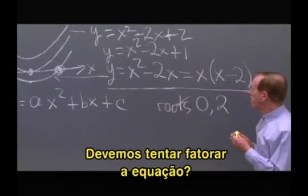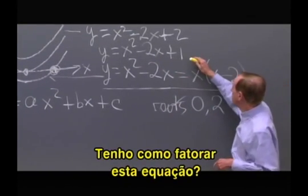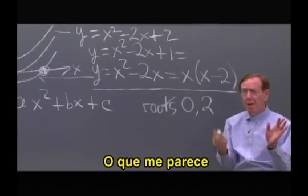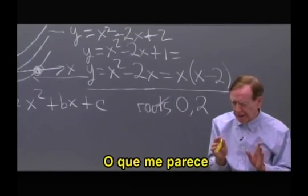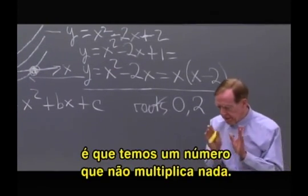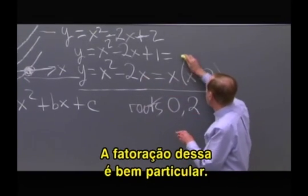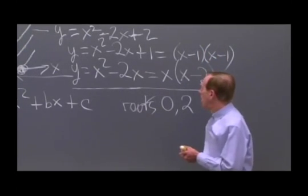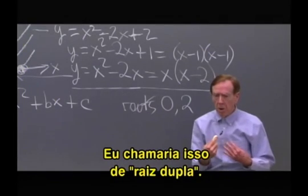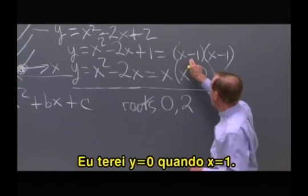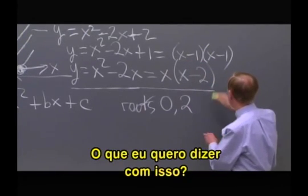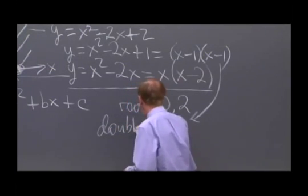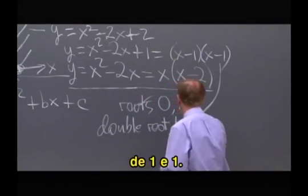Shall I try factoring this one? I see x squared minus 2x plus 1. That might jump to mind as something times itself — a very special one to factor. That's x minus 1 times x minus 1. What I would call a double root. That is zero at x equals 1. So what I'm saying about this one: double root at 1 and 1.